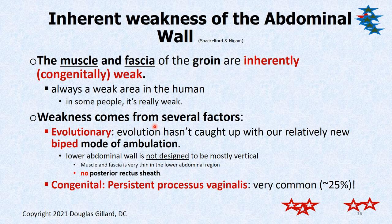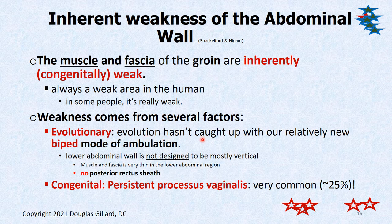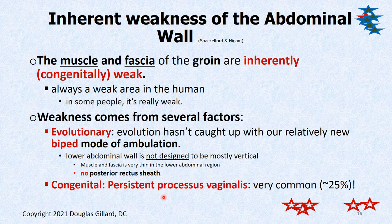Hernia risk factors: One risk factor is simply being human. There's a genetic weakness of the lower abdominal wall in humans — evolution suggests we haven't been upright long enough to develop the lower abdomen for withstanding these pressures. Then there's the processus vaginalis — the way testicles descend in humans and, for that matter, females. Females don't have testicles but still had a processus vaginalis, which pulled the round ligament down instead. About 25% of people have a persistent or open processus vaginalis and may have peritoneal fluid in their testes without noticing it.